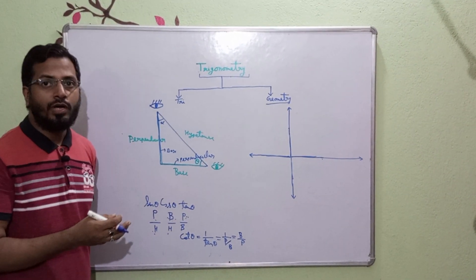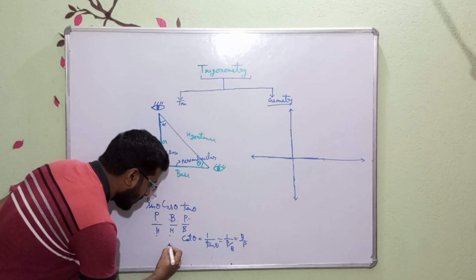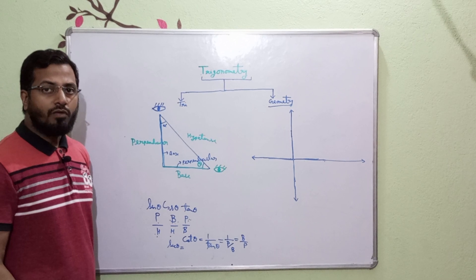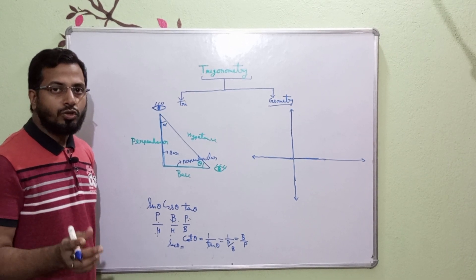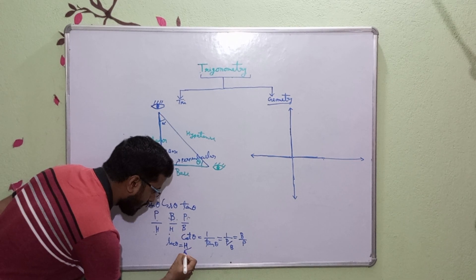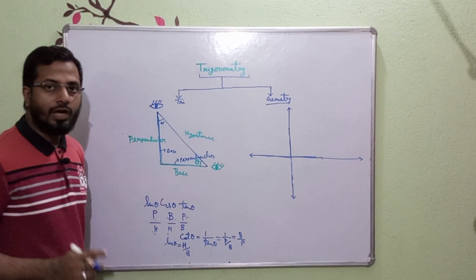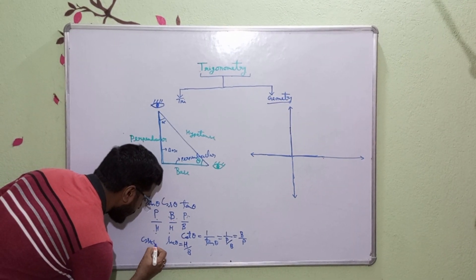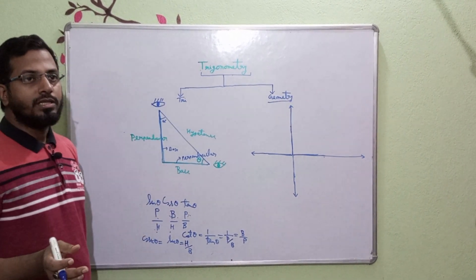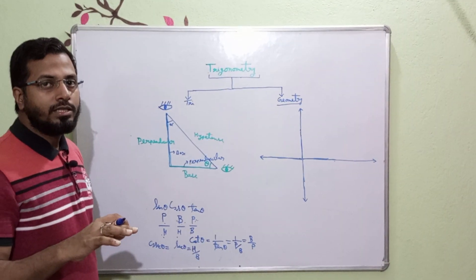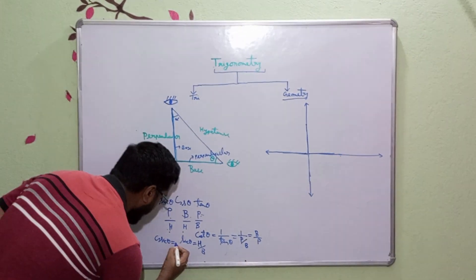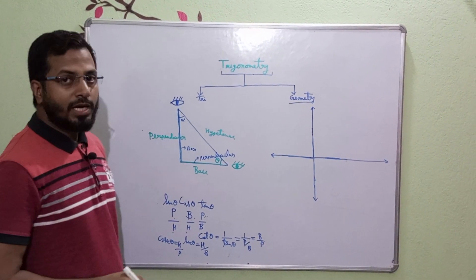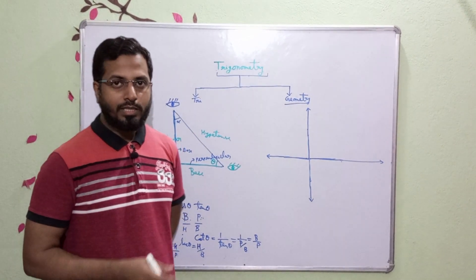The value of sec theta is the opposite of cos theta, so sec theta equals H upon B. And cosec theta is the opposite of sine theta, so cosec theta equals H upon P, that is hypotenuse by perpendicular.